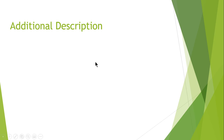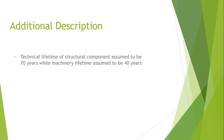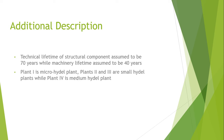Before moving toward the cost analysis, let us recall the additional description of the plots. The technical lifetime of the structures considered for the economic analysis is 70 years, while the lifetime for the used machinery is expected to be around 40 years. There were four plots: plot one is the micro hydro plant, plots two and three are small hydro plants, and plot four is a medium hydro power plant.